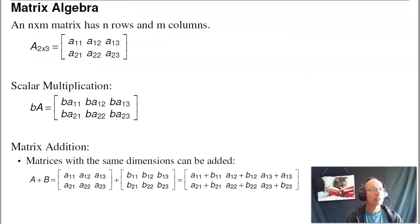A little bit of background on matrix algebra. If I have an n by m matrix, it has n rows and m columns. For example, a two by three matrix has two rows, three columns. If we multiply matrix by a scalar, every element is multiplied by that scalar. If I add matrices, the dimensions have to match.